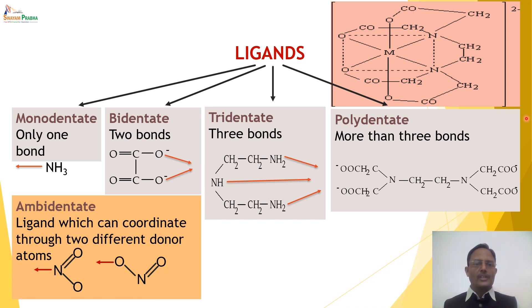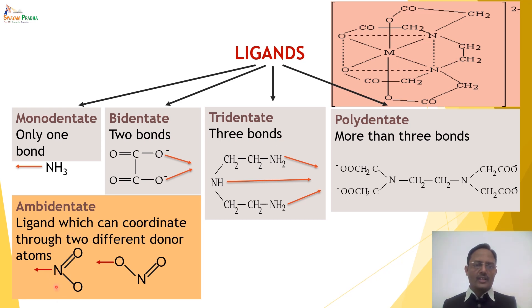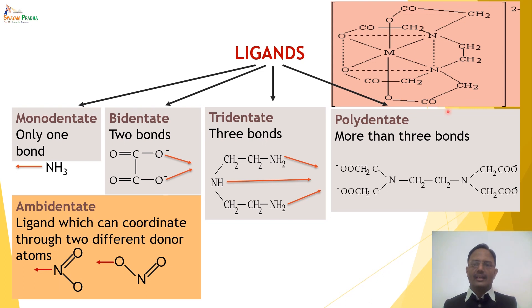There is also a special type called an ambidentate (or ambident) ligand. This ligand forms only one bond but can do so through different donor atoms. For example, NO2⁻ can form a bond through nitrogen or through oxygen, making it an ambidentate ligand.